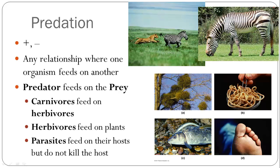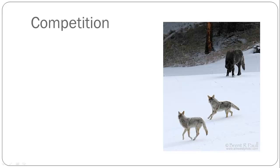Generally a predator feeds on prey, but you also have other types, including parasites — a smaller parasite attaches to the host, which is larger. It includes things like mistletoe, which is a parasitic plant; endoparasitic worms, which live in the guts of species; fungal parasites such as athlete's foot, which lives on the skin; and lampreys, which attach to fish and suck their blood. Predation is one type of interaction in a community.